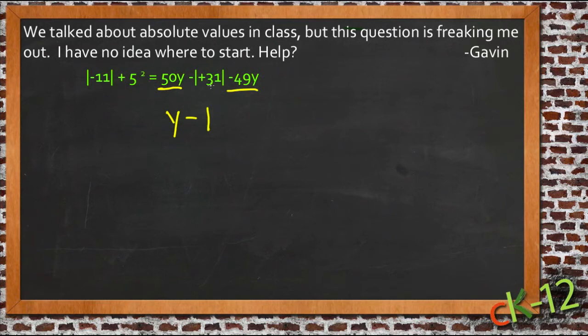Now, plus 31 is kind of a silly thing to write, because we never bother to write that plus symbol if it's going to be positive. So we should just say the absolute value of 31.